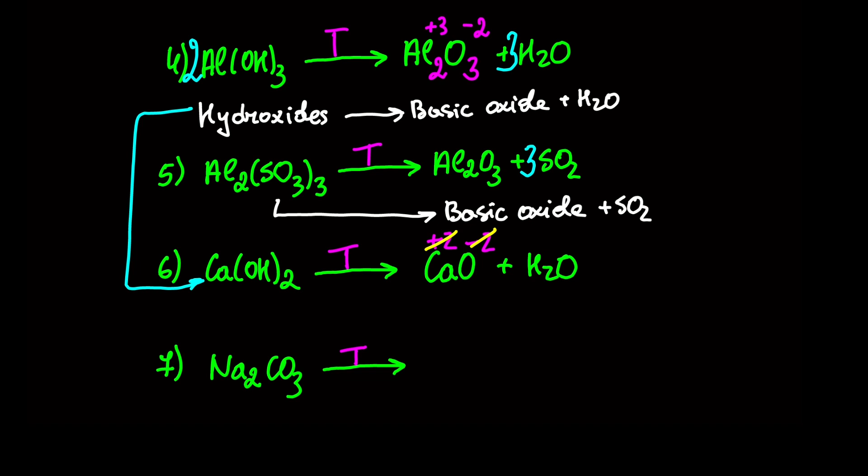Our last problem today is the decomposition of Na2CO3. We have salt with CO3 2 minus anion, so we get sodium oxide and CO2. Sodium is plus 1 and oxygen is always minus 2, so our chemical formula is Na2O. Like in the last example, we don't need to balance this chemical reaction.